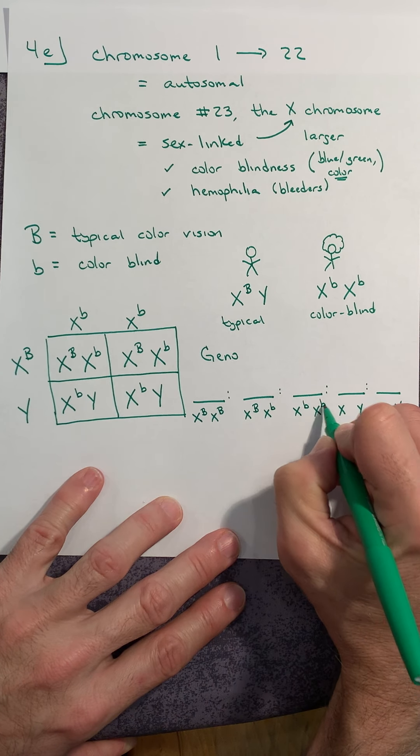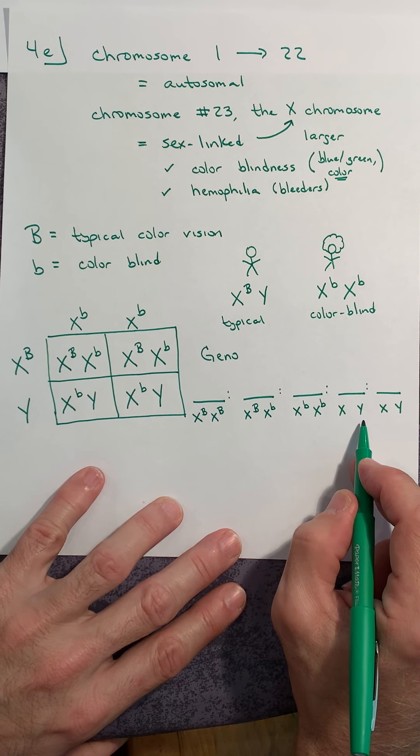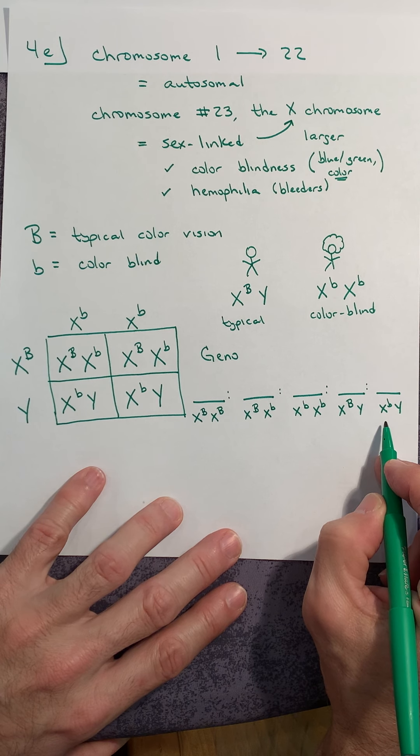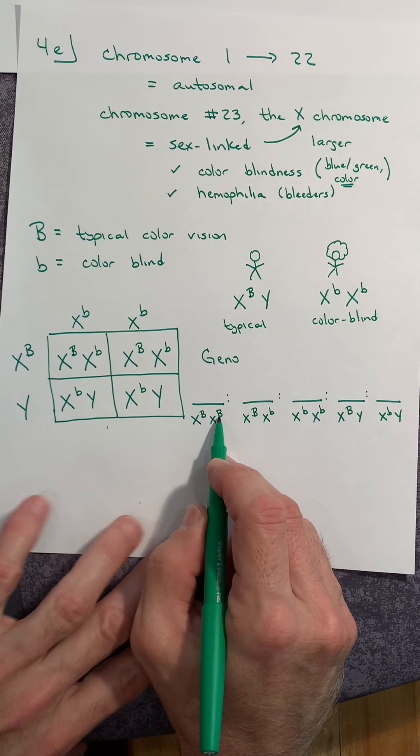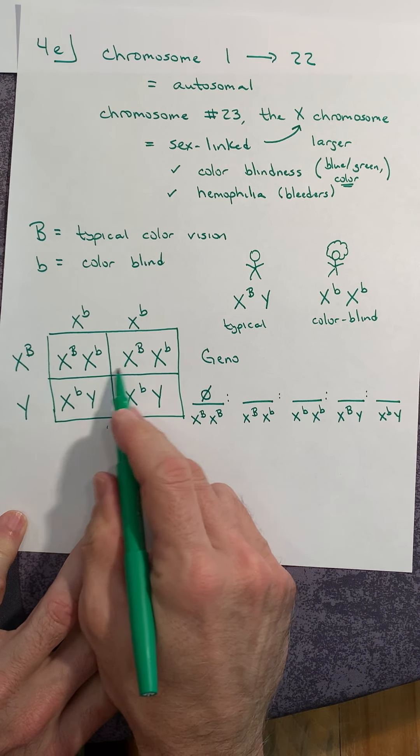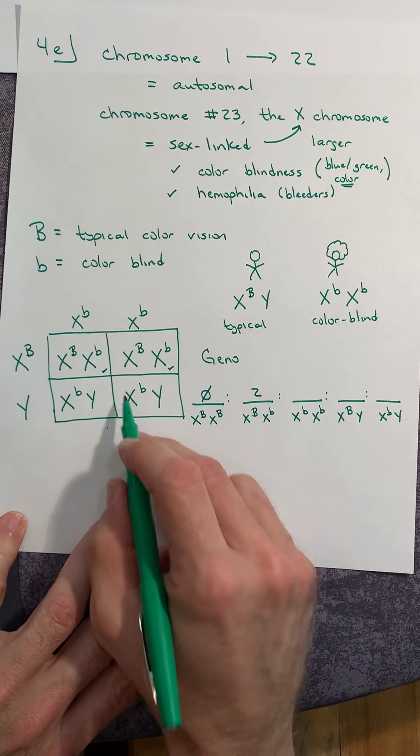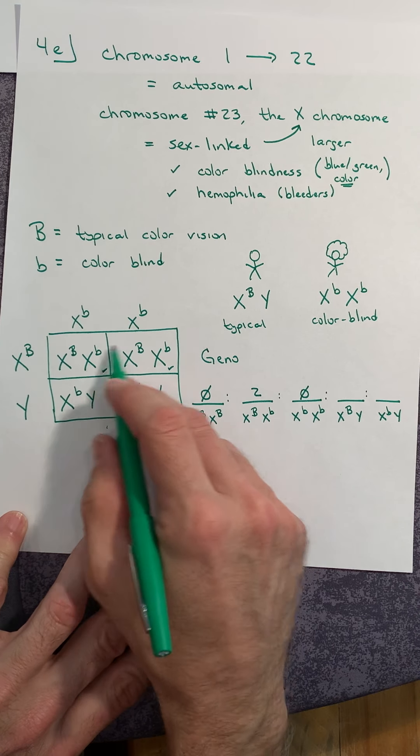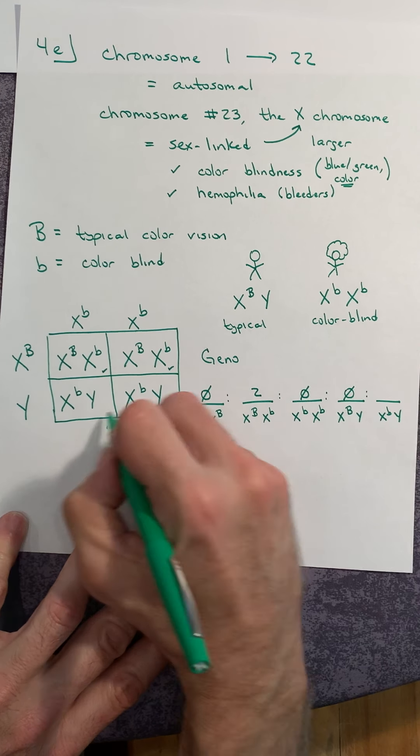There are three choices for the female, but for the male, there's only two. He's either dominant or recessive; he doesn't have the choice of two alleles because males only carry one X. Let's go back to our Punnett square. How many X big B X big B, homozygous dominant females? None. How many heterozygous females? Two. How many colorblind females? None. How many typical males? None. How many colorblind males? Definitely two.